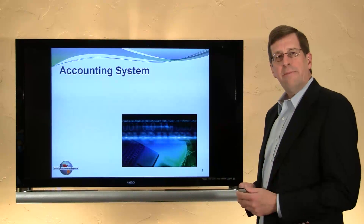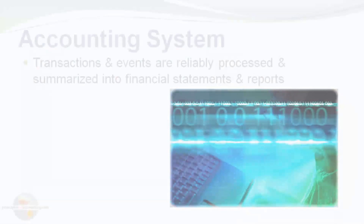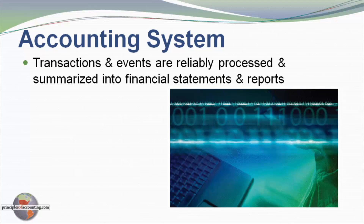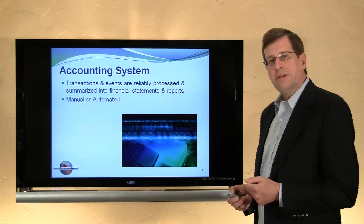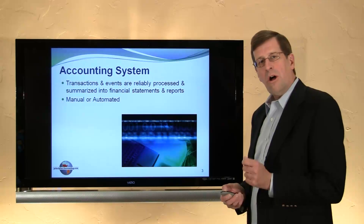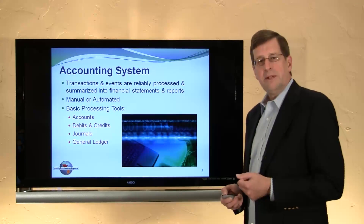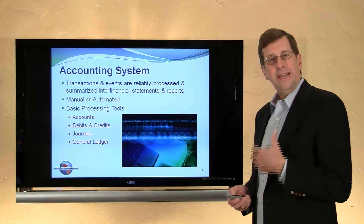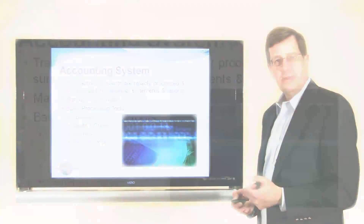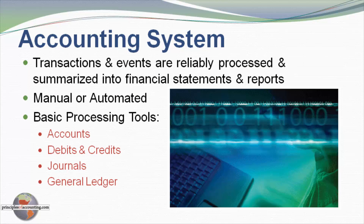Let's begin by considering an accounting system. An accounting system is a system whereby transactions and events are reliably processed and summarized into financial statements and reports. Whether that system is manual or automated, it will have several elements in common: the idea of accounts, understanding of debits and credits, the concept of journals, and the concept of a general ledger.